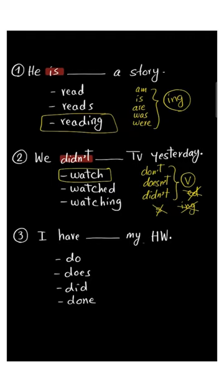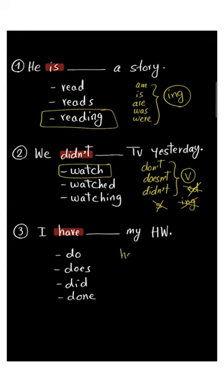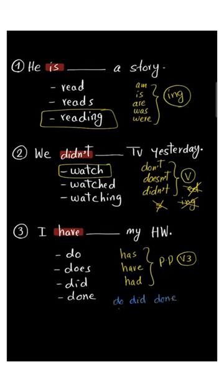I have blank my homework: do, does, did, done. The key is 'have', and after has, have, had, we choose the past participle, verb 3. Here we have do, did, done. So this is verb 1, this is verb 2, this is verb 3. So this is the correct answer: done.